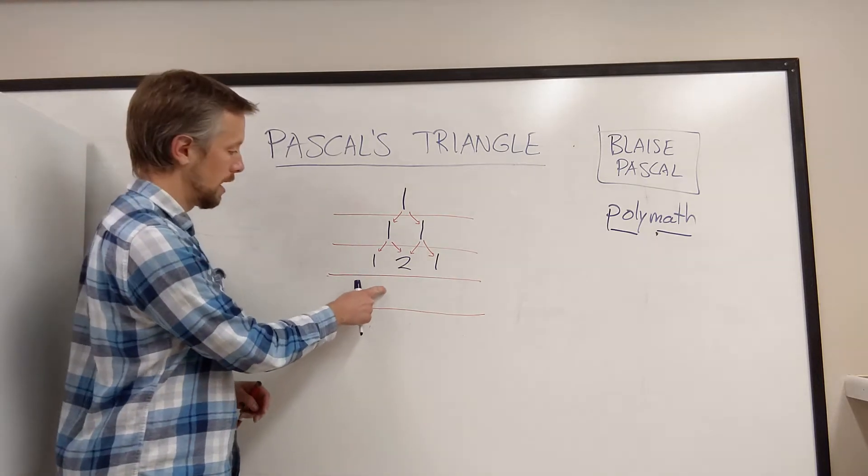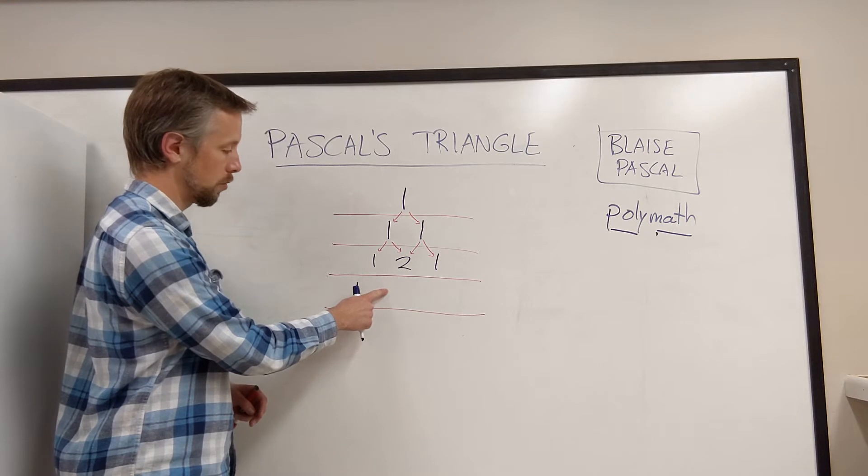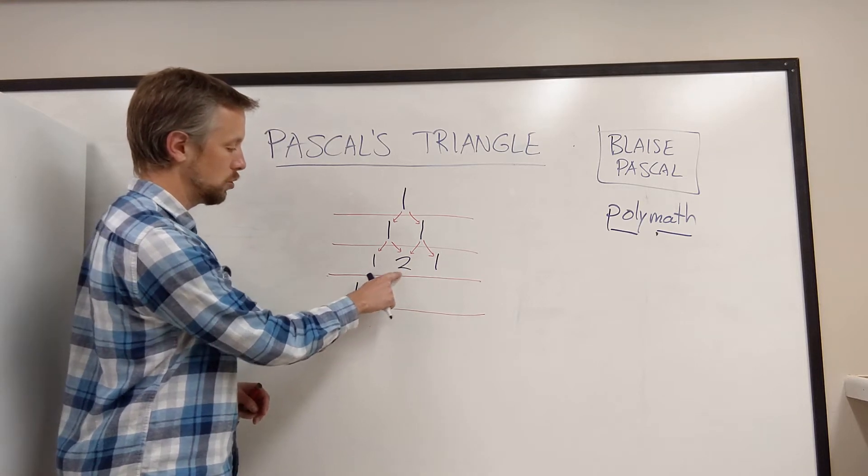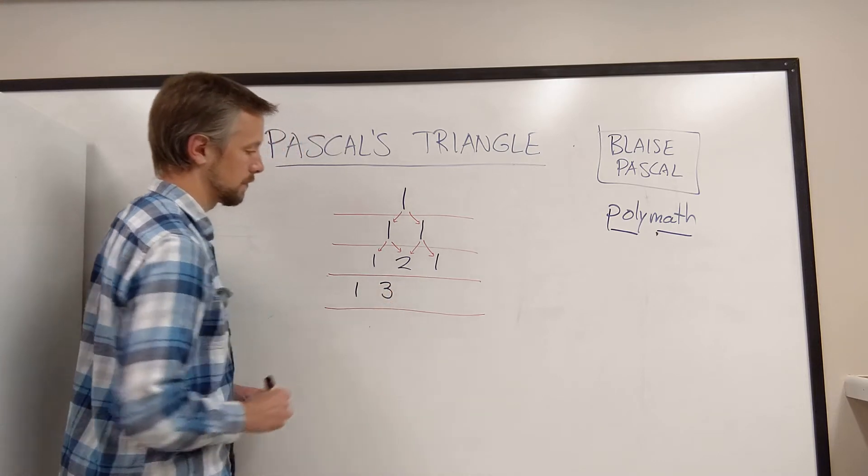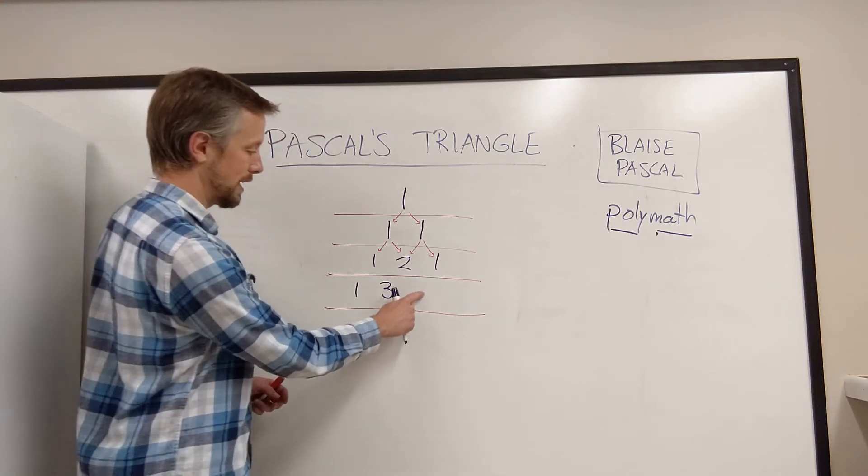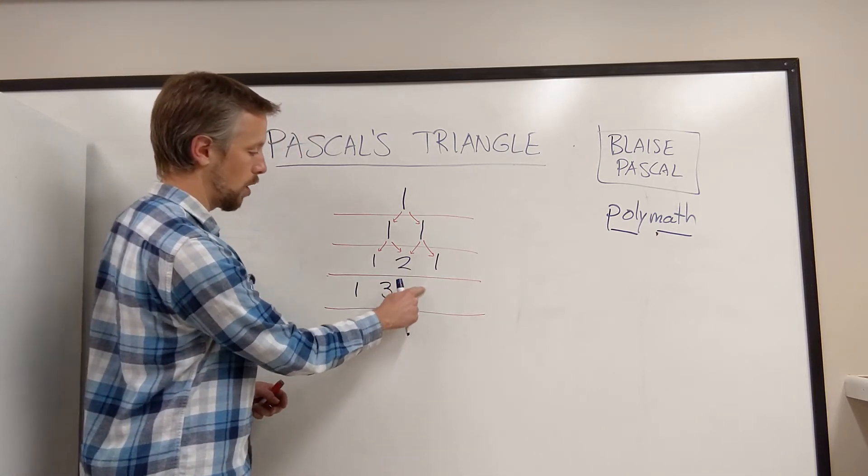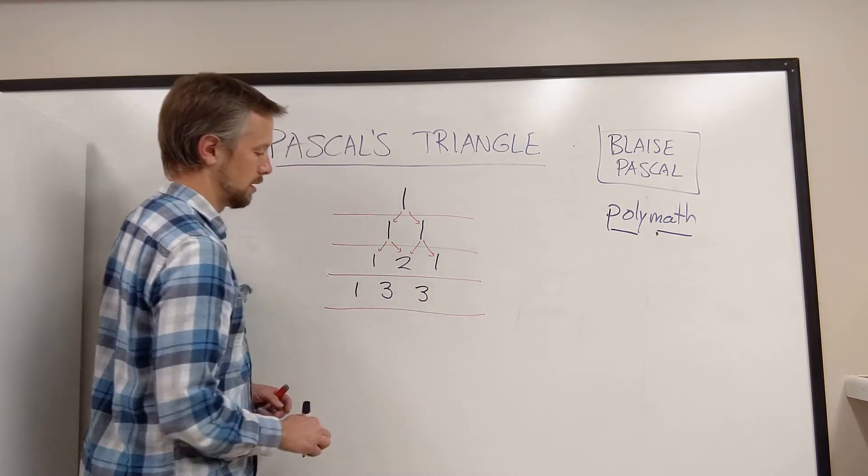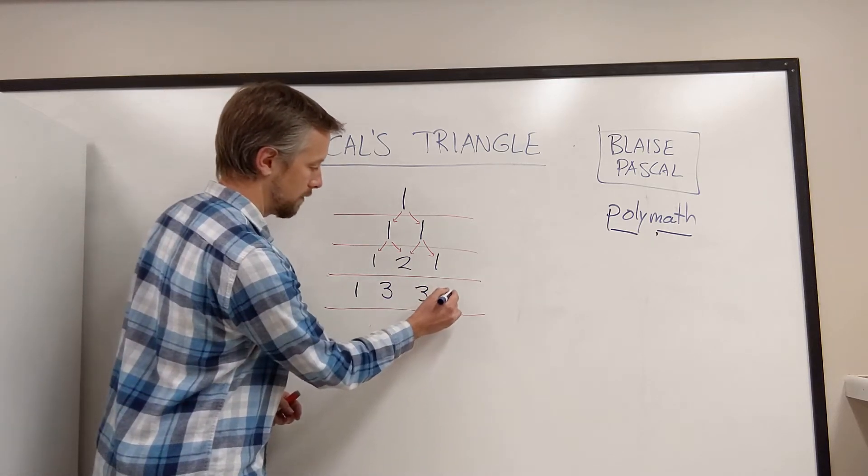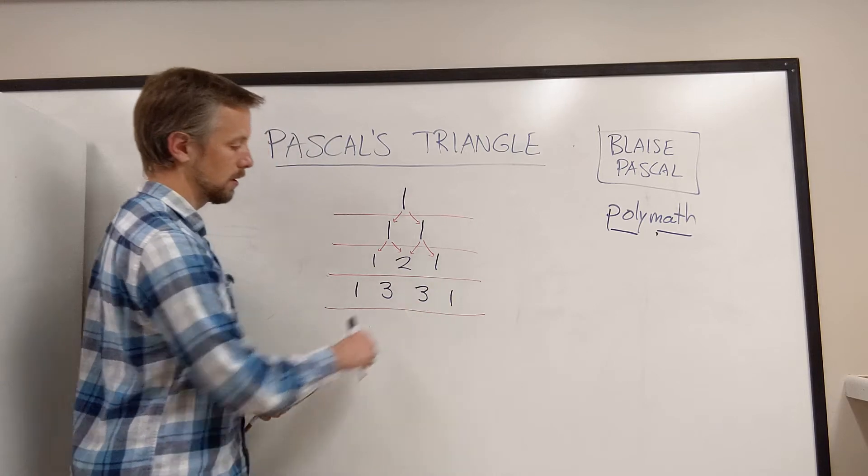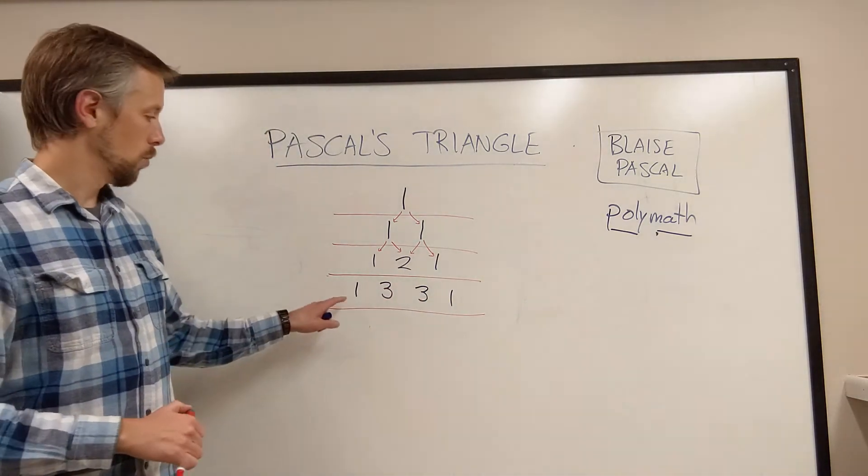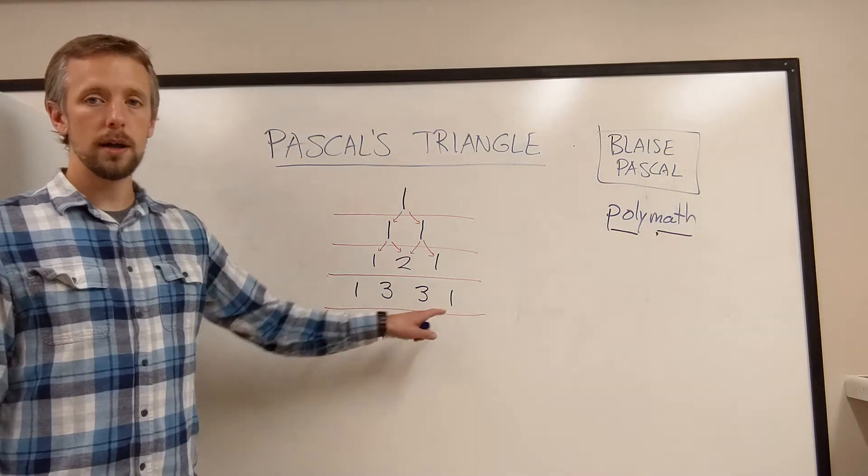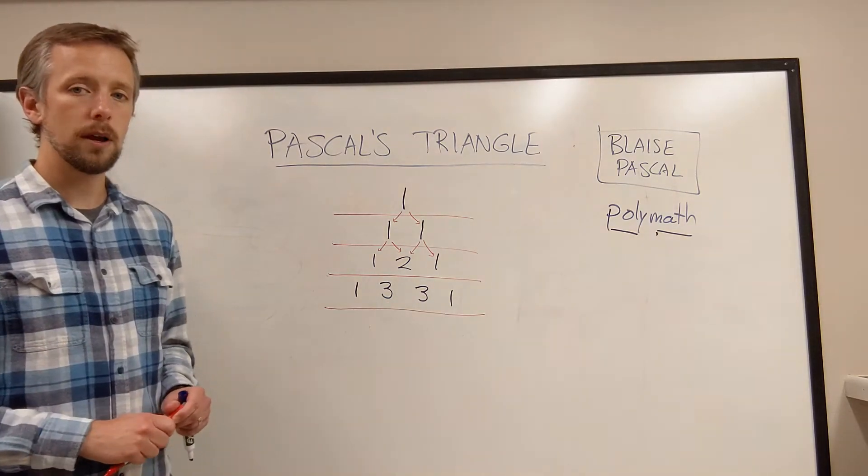In this spot here, I'm bringing the 1 down and to the right, and I'm bringing the 2 down and to the left. And they collide and make a 3. Same thing happens here. We have a 2 and a 1 making a 3. And then here, we have just this 1 here gets brought down and to the right. And that's what we have there. So this now is the fourth row: 1, 3, 3, 1 is the fourth row of Pascal's Triangle.